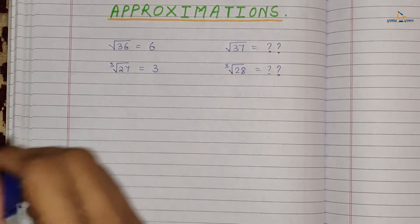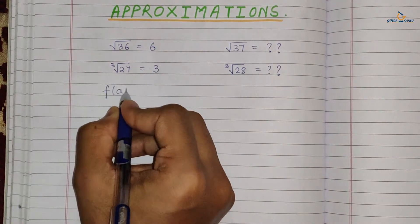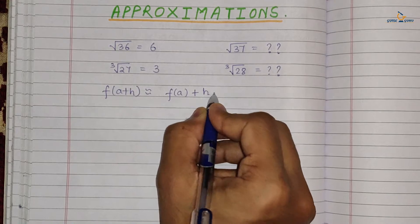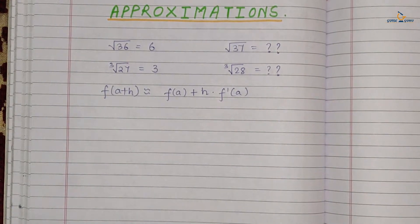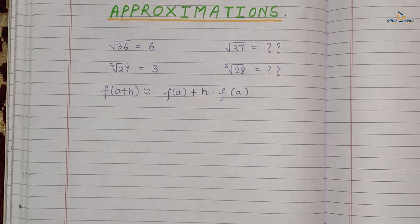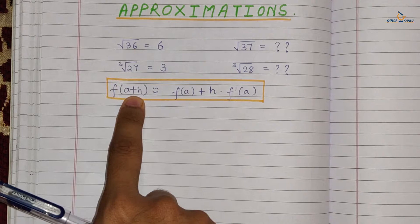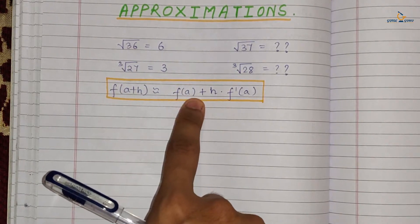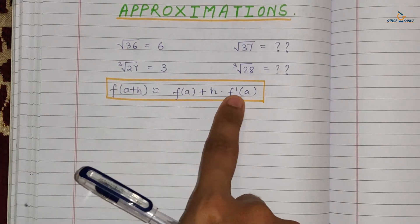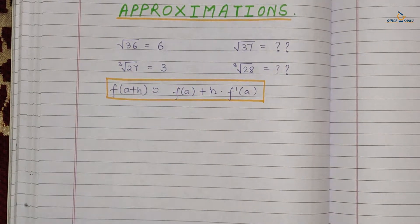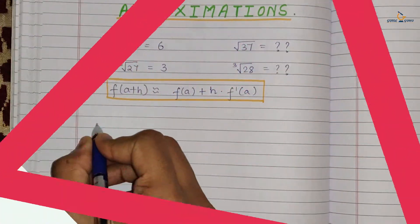For this we have a formula from derivatives: f(a + h) ≈ f(a) + h · f'(a). This is the main formula we are going to use for finding approximations. You just have to split your number into a and h, find f(a), then add h multiplied by the derivative f'(a).